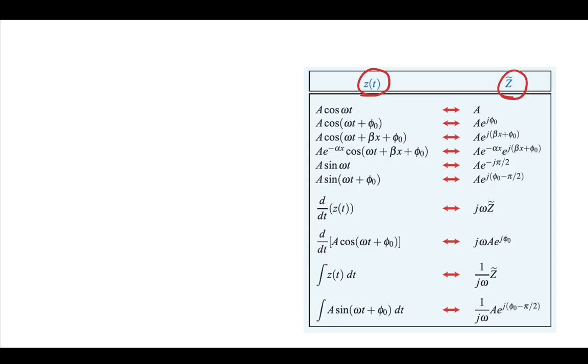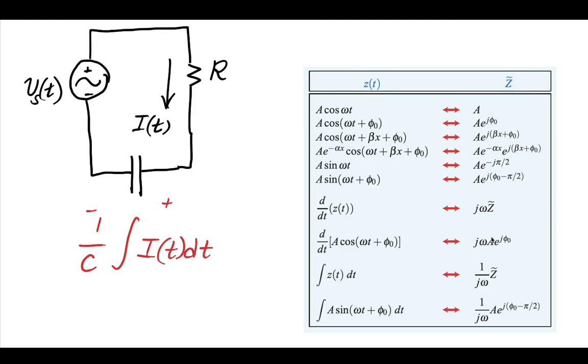So for example, we can see that instead of doing a derivative, we could just multiply it by j omega in the phasor domain.